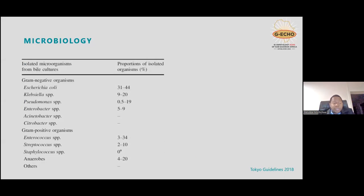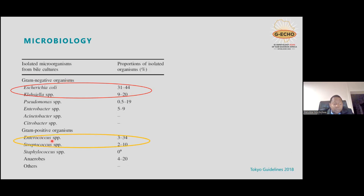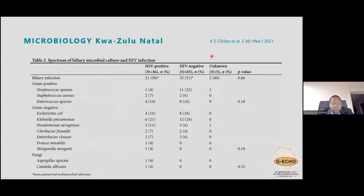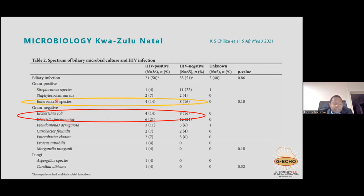The Tokyo guidelines identify E. coli and Klebsiella as the main gram-negative pathogens, and Enterococcus faecalis and Streptococcus as the main gram-positive pathogens cultured from bile. Locally in KwaZulu-Natal, a study by KS Chiliza demonstrated similar findings — E. coli and Klebsiella as main gram-negative pathogens, and Enterococcus faecalis as the main gram-positive pathogen. Notably, there was no statistical significance in bacterial bile between HIV-positive and HIV-negative populations.